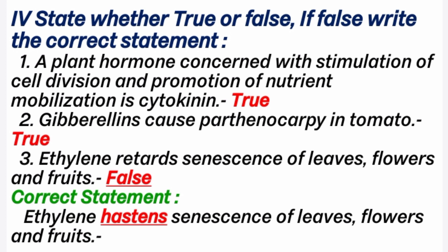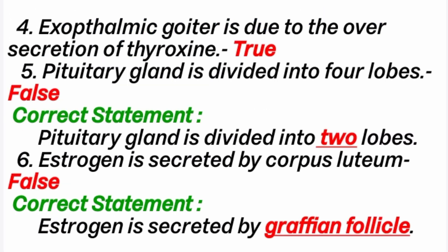2nd question: Gibberellin causes parthenocarpy in tomato — answer is true. Parthenocarpy means the plants produce fruits without fertilization. 3rd question: Ethylene retards senescence of leaves, flowers and fruits — answer is false. Correct statement: Ethylene hastens senescence of leaves, flowers and fruits. 4th question: Estrogen is secreted by corpus luteum — answer is false. Correct statement: Estrogen is secreted by Graafian follicle cells; progesterone is secreted by corpus luteum.